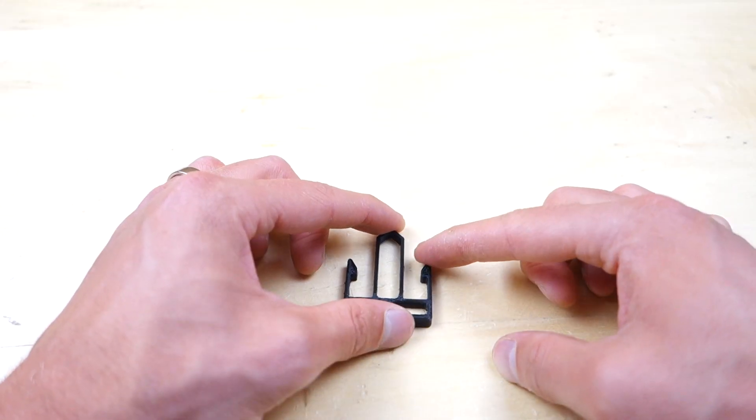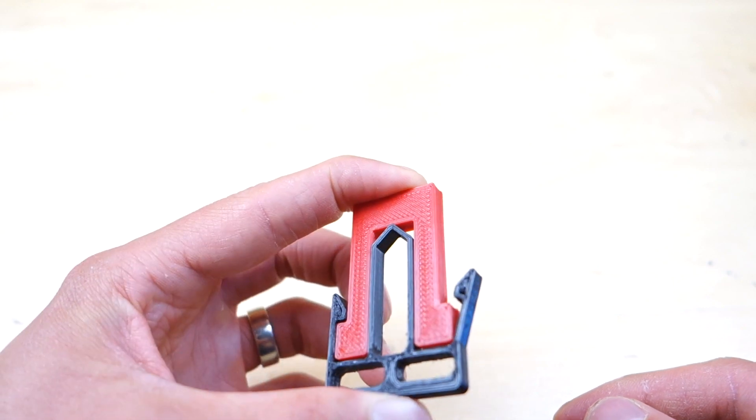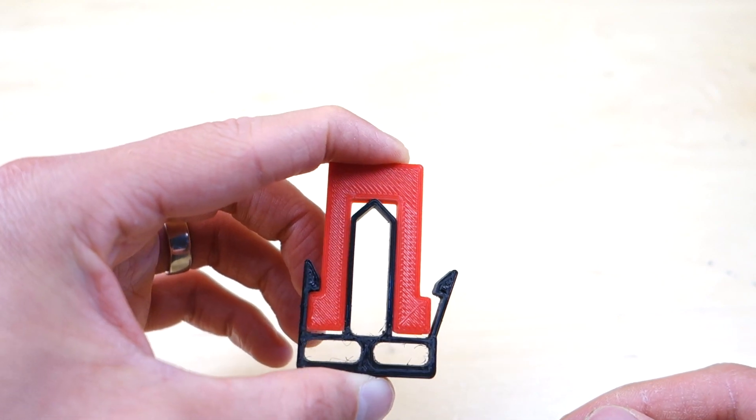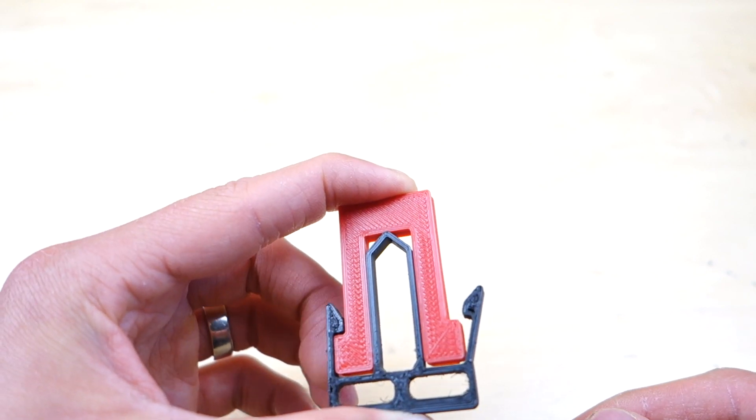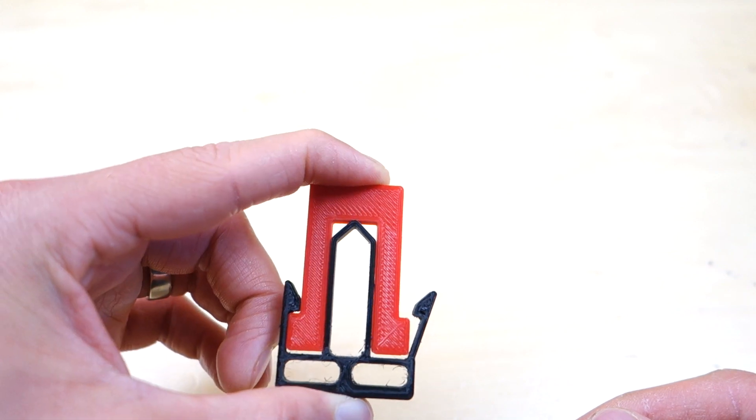However, before you get too excited, there's one big problem with the elongation at break value that I need to tell you about. You see, the snap hook will begin to permanently deform long before fully reaching that value. So the result is that the snap hook may not fully lock in place once you insert it in.